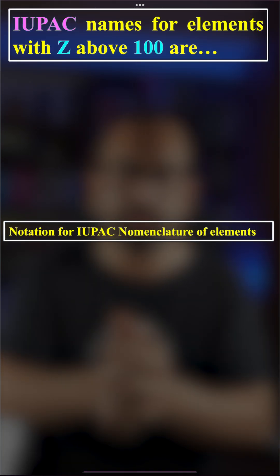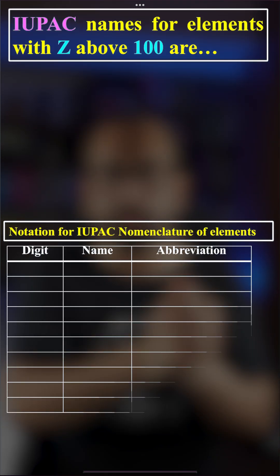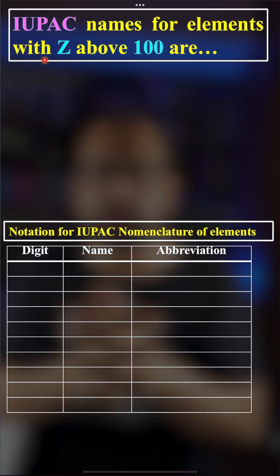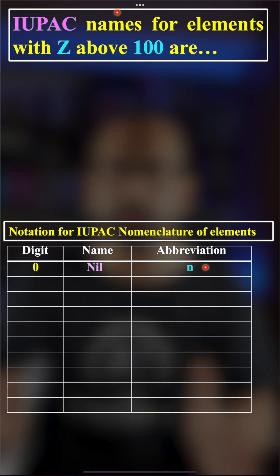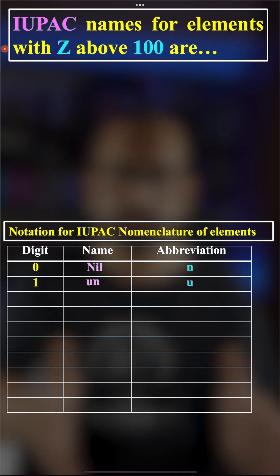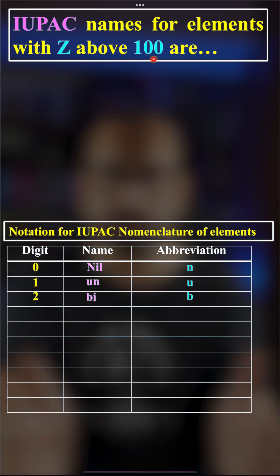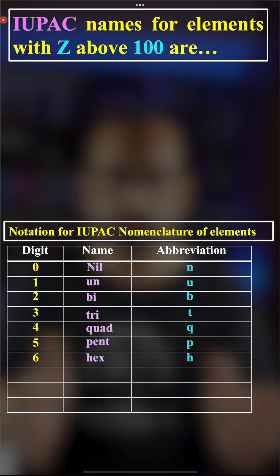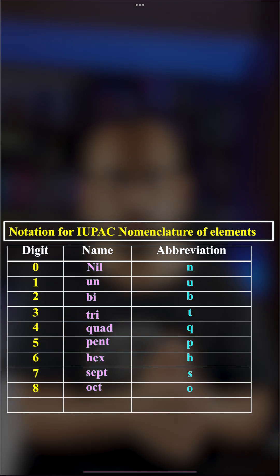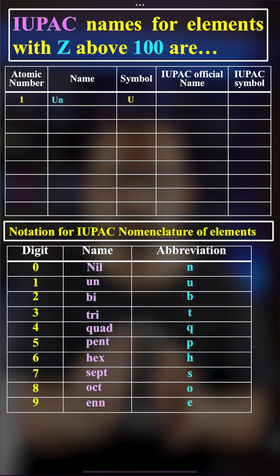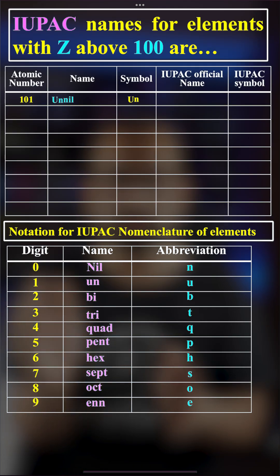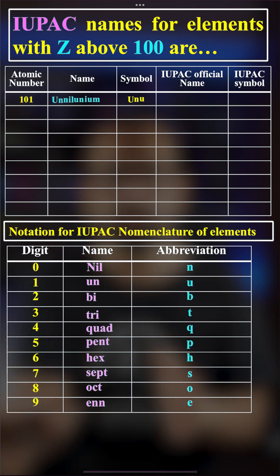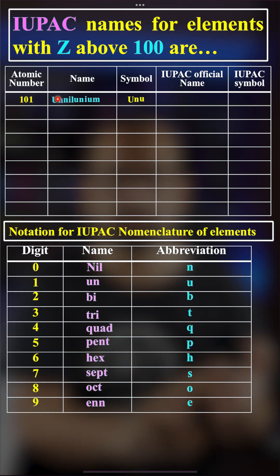Today we are going to cover nomenclature of elements with atomic number Z greater than 100. Here is the notation for IUPAC nomenclature of elements. One is 'un', zero is 'nil'. At the end we put '-ium' and the symbol keeps the first letter of each root name.